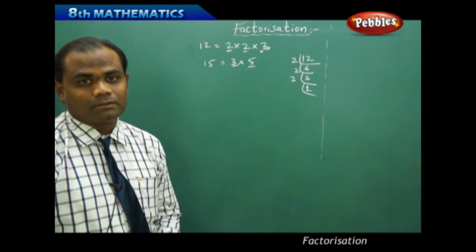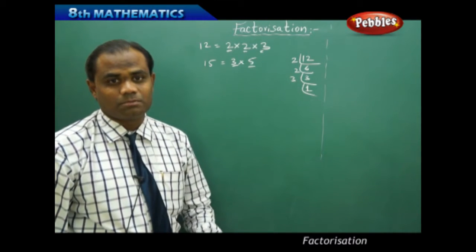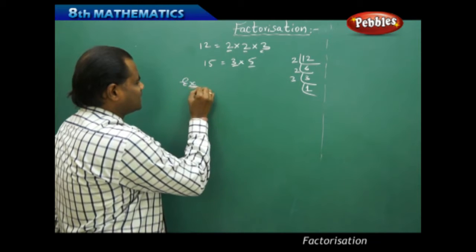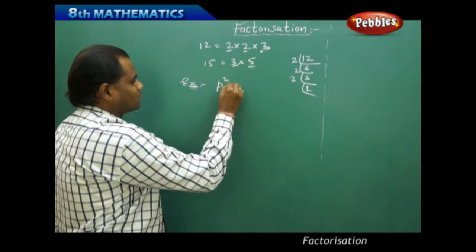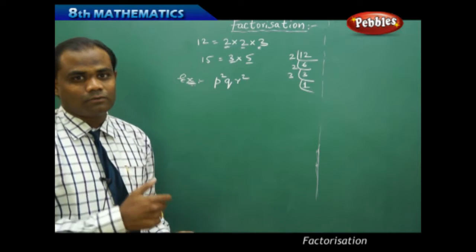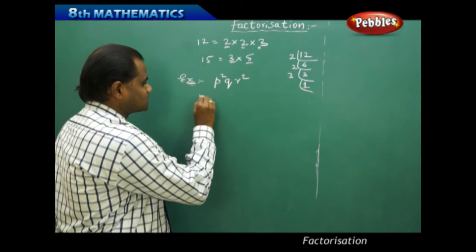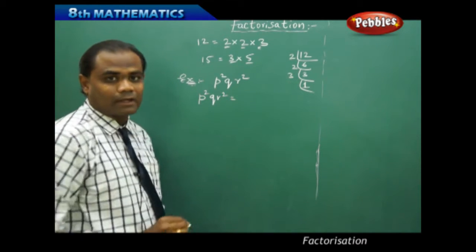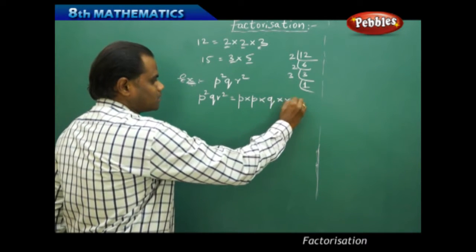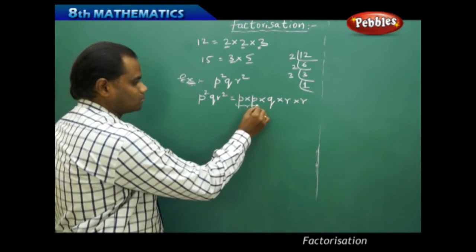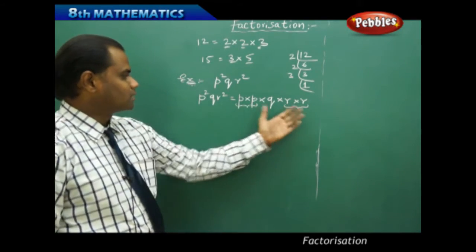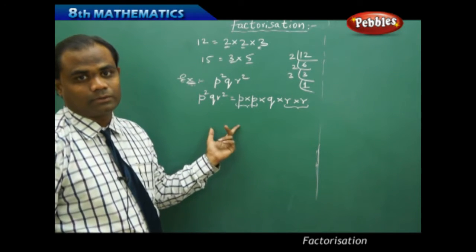Let's see how factorization works for algebraic expressions. Take the algebraic expression p²qr². We can write this as p × p × q × r × r, where p² comes from p × p and r² comes from r × r. So these individual factors — p, p, q, r, r — are said to be the factors of the algebraic expression p²qr².